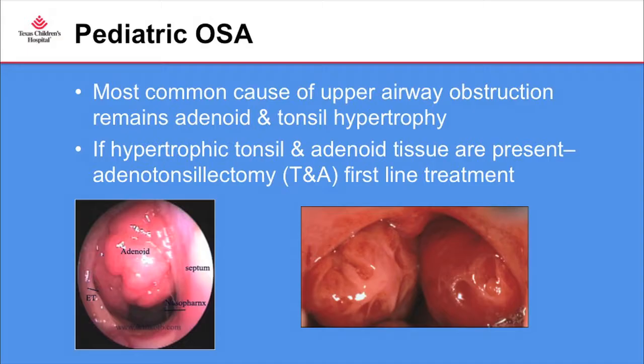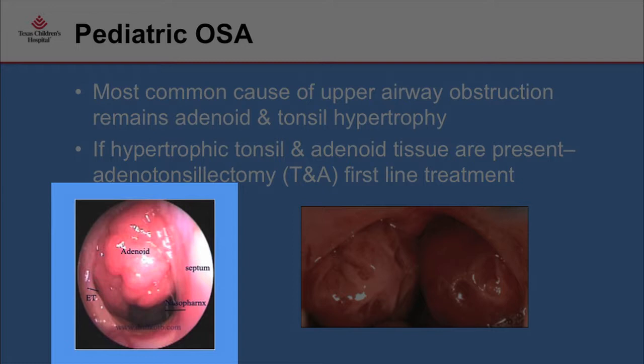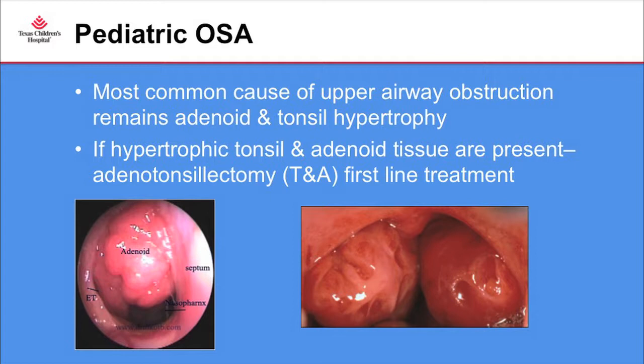Once we get the sleep study information, tonsillectomy and adenoidectomy remains the first-line treatment for kids known to have adenotonsillar hypertrophy. The adenoids can sometimes be a mystery in terms of size and location. Looking behind the nose with a scope, we can see adenoids obstructing about 80% of the nasal airway — a case where we would consider removing them.